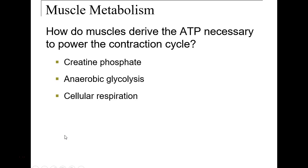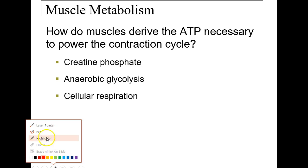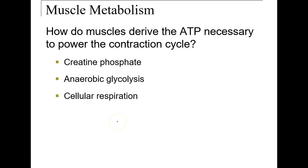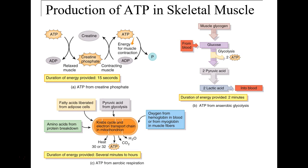We will take a look at muscle metabolism, or how the muscle cell will produce ATP necessary to contract. We have three different types used for the muscle: creatine phosphate, anaerobic glycolysis, and cellular respiration. The fastest form of ATP production will be creatine phosphate.